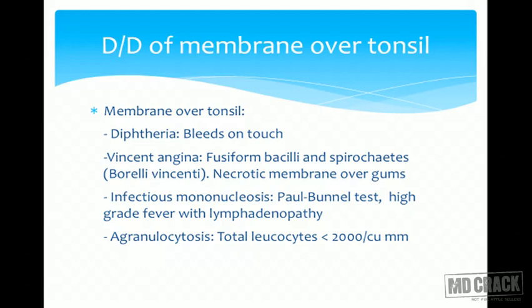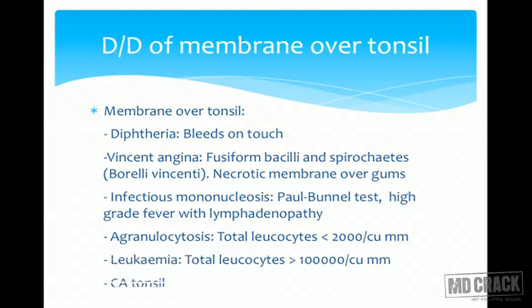Infectious mononucleosis is diagnosed by the Paul-Bunnell test, and presents with high-grade fever and lymphadenopathy. Agranulocytosis, leukemia, and carcinoma of the tonsils can also produce membrane over the tonsils and must be differentiated from acute tonsillitis.